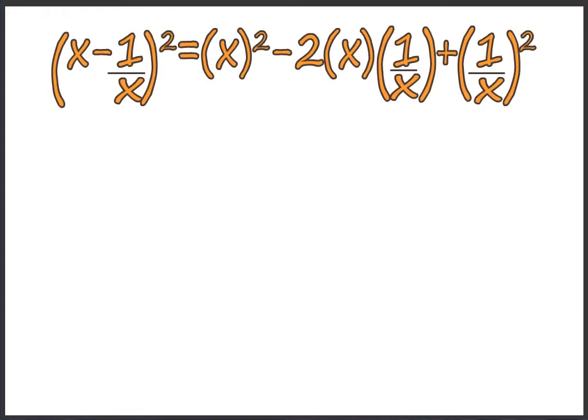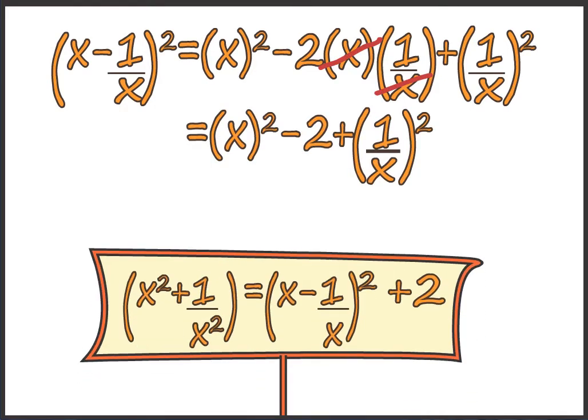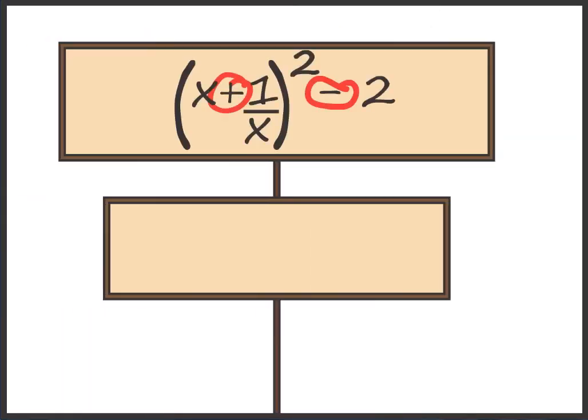We have another important formula: x minus 1 upon x, whole squared, equals x squared minus 2 plus 1 by x squared. We derive that x squared plus 1 upon x squared equals x minus 1 upon x, whole squared, plus 2. Always keep in mind: for the positive form it is minus 2, and for the negative form it is plus 2.